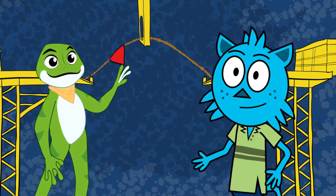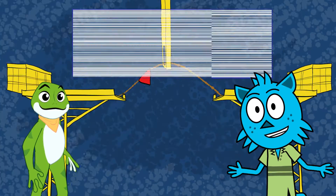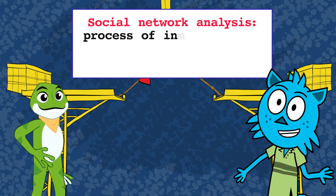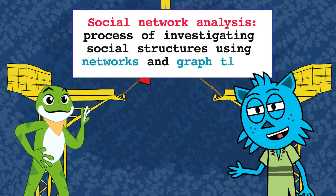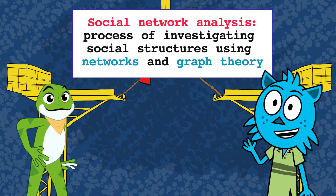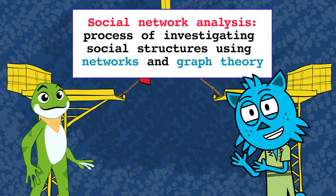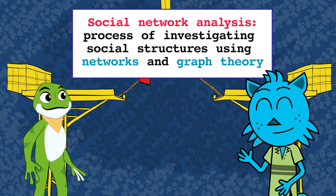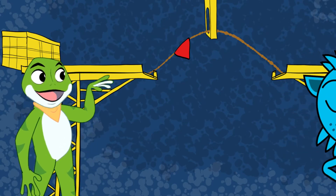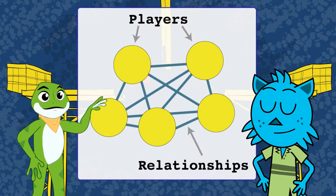Can we use data science to explore how players communicate with each other? Totally, that's a fantastic idea. We can use the social network analysis technique to identify patterns of social interactions. We can use graph theory to understand social structures. To build network graphs, we need two components: players and relationships.